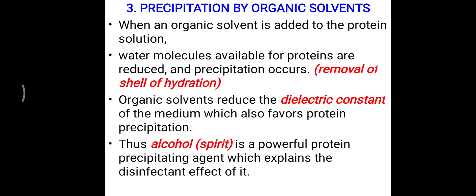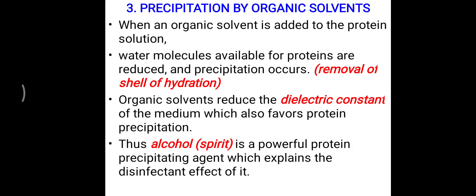This is the basis for why alcohol is a powerful protein-precipitating agent, which explains its disinfectant effect. When we apply alcohol over a site of injury, cell debris and dead cell particles are removed by precipitating their protein. This allows us to clean the wound with spirit — unnecessary debris or protein particles are removed from the site of injury. That is the simple clinical application of organic solvents to precipitate protein.